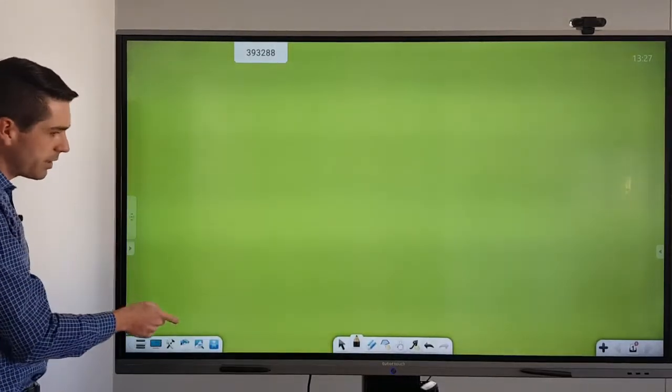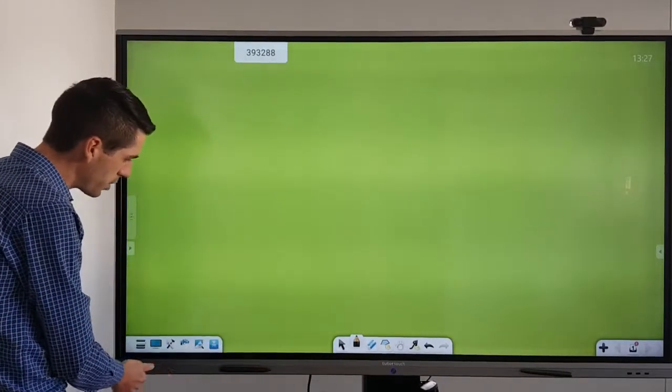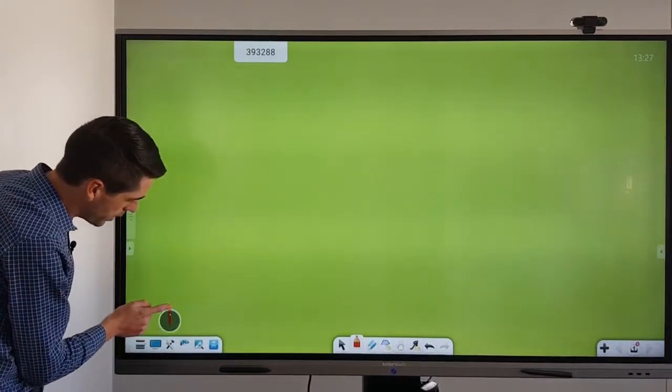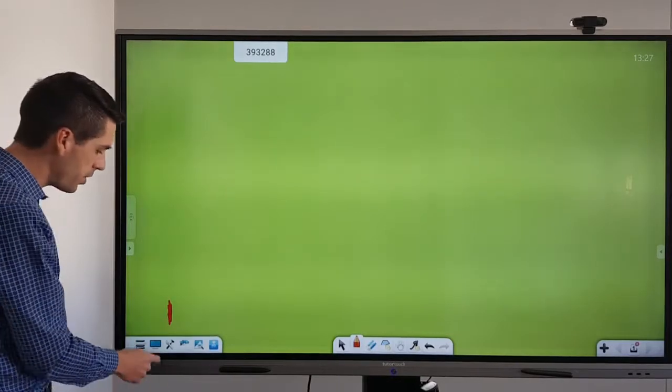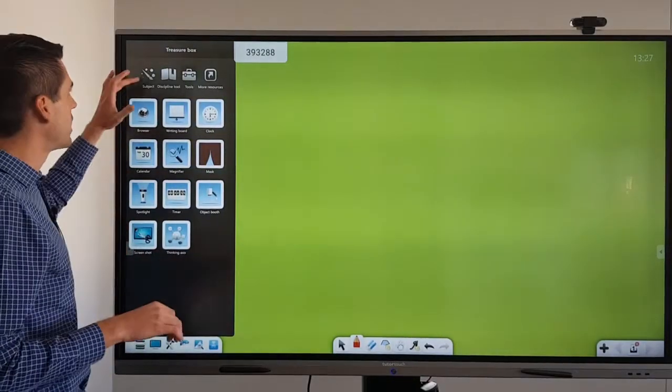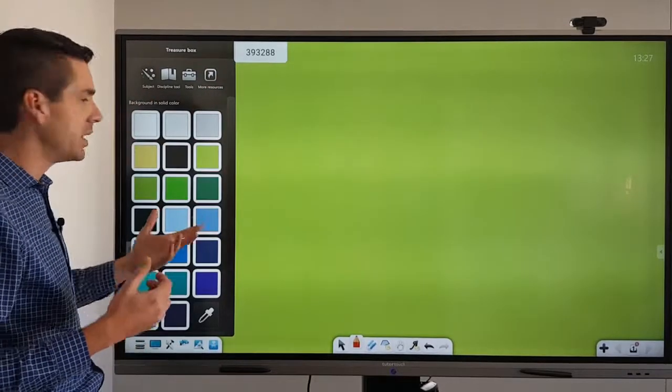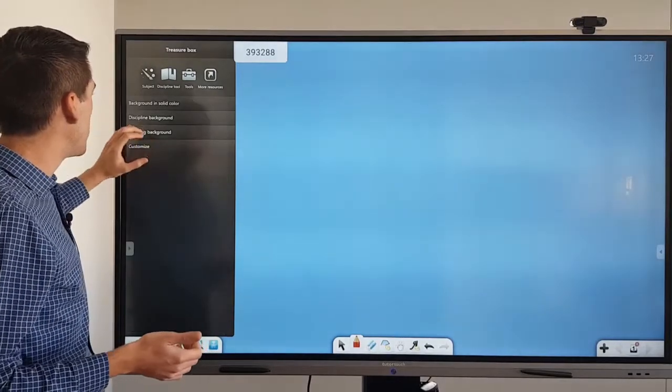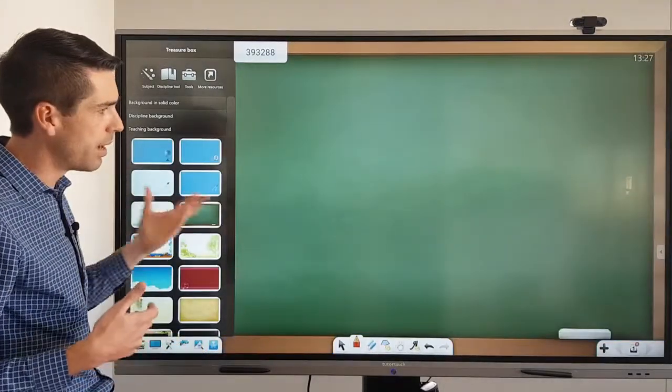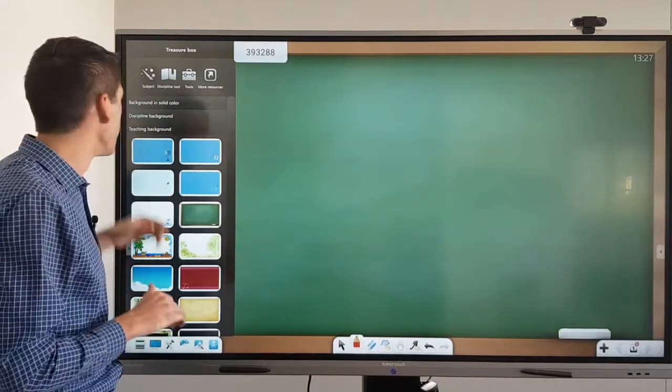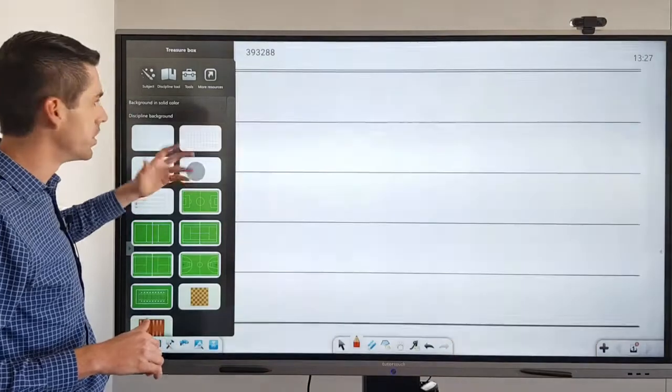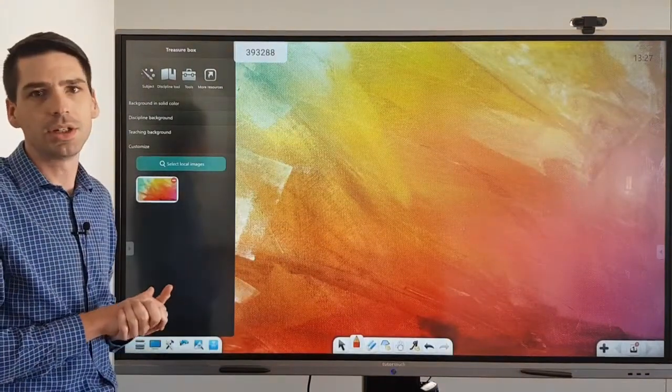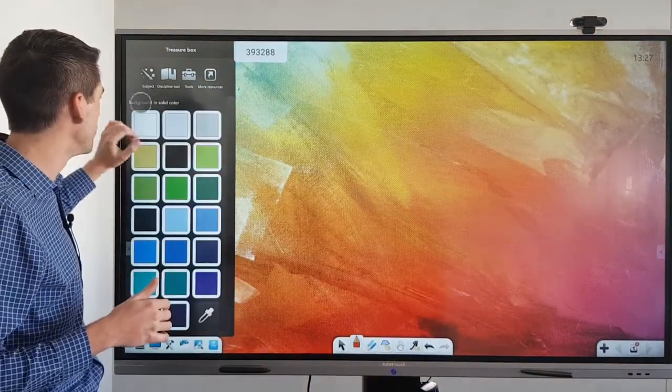Then before I go into our subject matters I quickly want to touch onto our treasure box which sits in the bottom here. The little hammer and the wrench icon is called our treasure box and this is essentially additional features that come with the panel. So if the green background is too harsh for you, you can make it a little bit more subtle by making it blue or perhaps you would like to have your standard green board back to have that authentic classroom feel. Perhaps you have a need for a grid line or a sports field or you just want to simply customize it to any image that you might have on your computer, you are also able to do that.